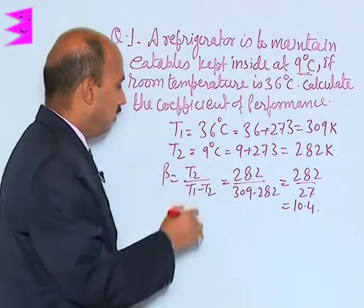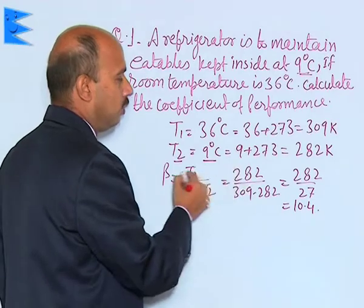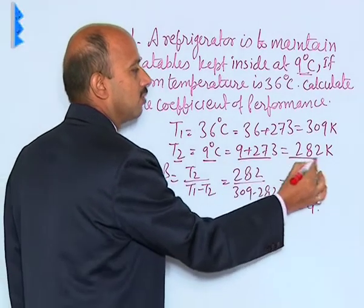We have to convert into Kelvin. T2 is equal to 9 degree Celsius, and when converted into Kelvin, that is 282 Kelvin.